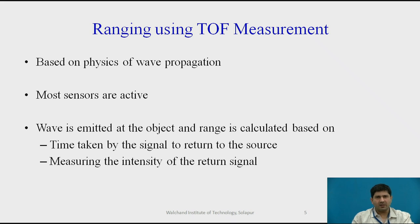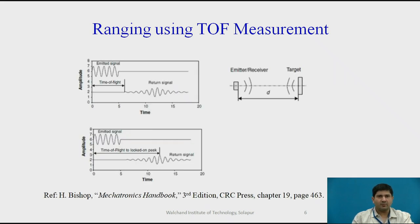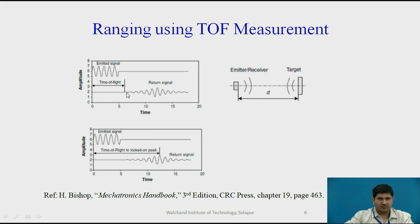Even though we say time of flight, it is implicit that other techniques such as phase modulation and intensity measurement are also included in that definition. As shown in the picture, towards the left you have an emitter which is typically the sensor emitting energy at the target — which may be light, microwave, or ultrasonic — and that signal bounces off the target and is then measured. You can detect the signal coming back as the time of flight, or for better accuracy, you can measure the peak of the return signal and estimate the range. More sophisticated equipment can use all of the above techniques.